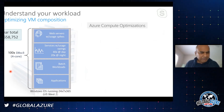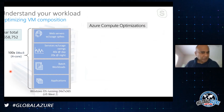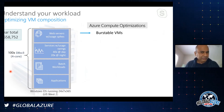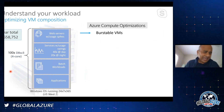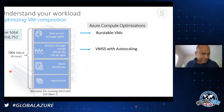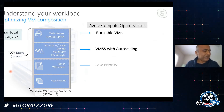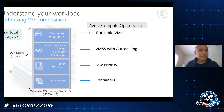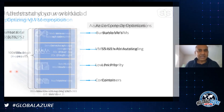Here are some optimizations we can do. For web servers, we can use burstable VMs. For services with predictable scaling, auto-scaling using VM scale sets. For batch workloads, something like Azure Batch. And for line of business applications, we can containerize them. What is a burstable VM? You provision a VM that matches the baseline performance - not your top-line performance, but your baseline.